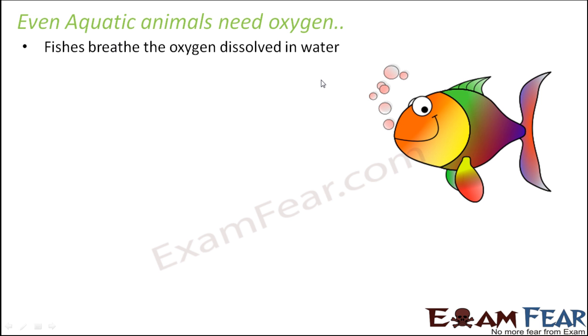The best example of an aquatic animal is a fish. A fish also needs oxygen. So how do they get oxygen? Because they live in water, so where is the oxygen?